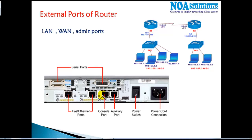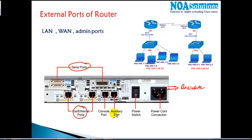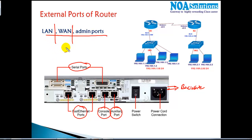Looking at the back side of the router, you'll find some serial ports, some Ethernet ports, and a console and auxiliary port. All the ports on a router are categorized into three categories: LAN ports, WAN ports, and administrative ports.